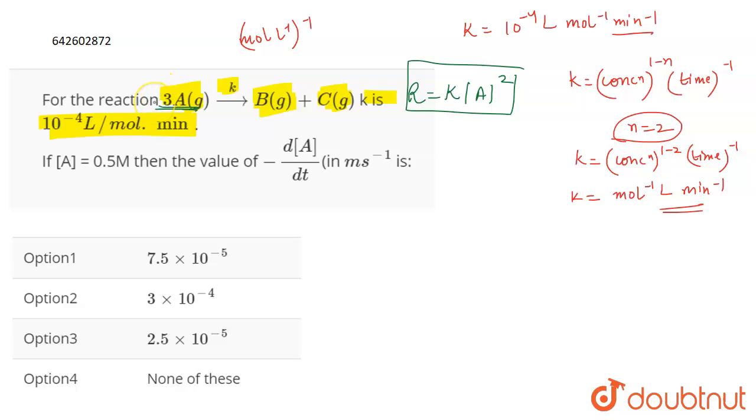For an elementary reaction, order is the molecularity. Means that the number of molecules reacting is equal to the order. But in this case, it is not because this is not an elementary reaction. So from here you can find out the value of rate.